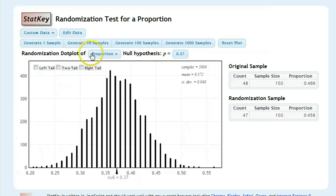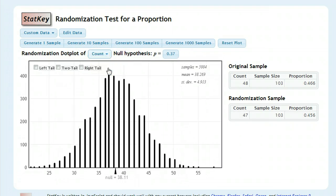I'm going to change this randomization dot plot here from proportion to count. And the reason I care about that when I'm dealing with proportions is because sometimes you can get some strange rounding errors. And we don't want to have to worry about that. Our original sample was 48 out of 103.